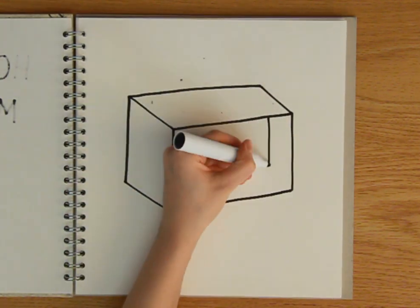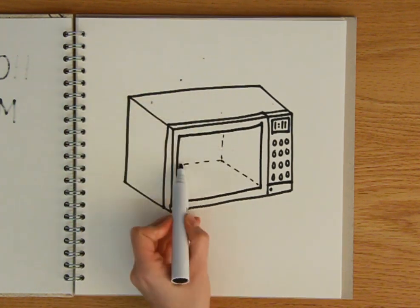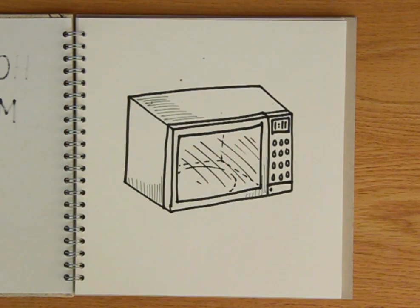These days, most of us own a microwave oven. From reheating leftovers to making the dreaded ready meal, they're a pretty common piece of kitchen kit. But how do they actually cook things?